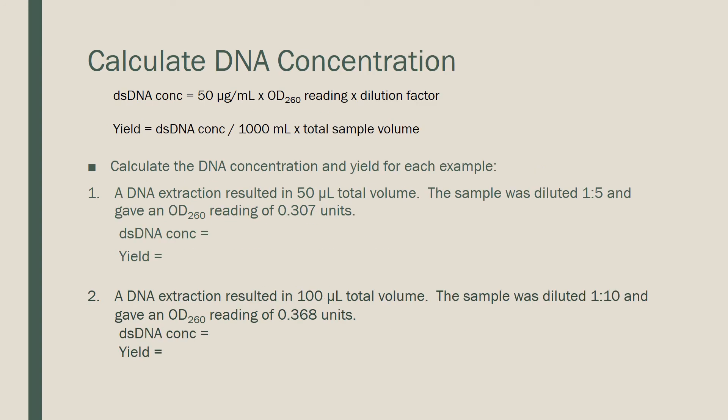Now we're going to work through some calculations to determine the double-stranded DNA concentration and yield. Any time you see DSDNA, that stands for double-stranded DNA. The formula for double-stranded DNA concentration is 50 micrograms per milliliter multiplied by your OD260 reading multiplied by your dilution factor if there is one. We multiply by 50 because one OD260 unit equals 50 micrograms per milliliter of DNA.